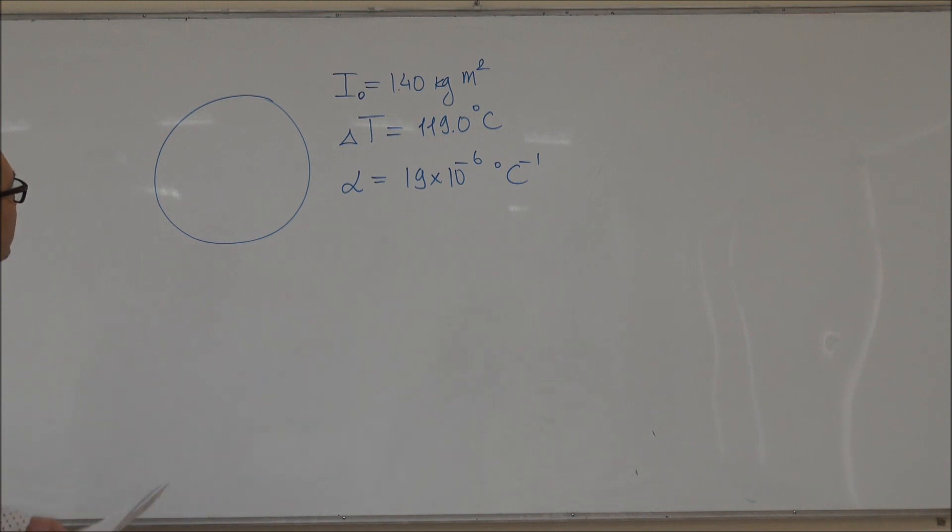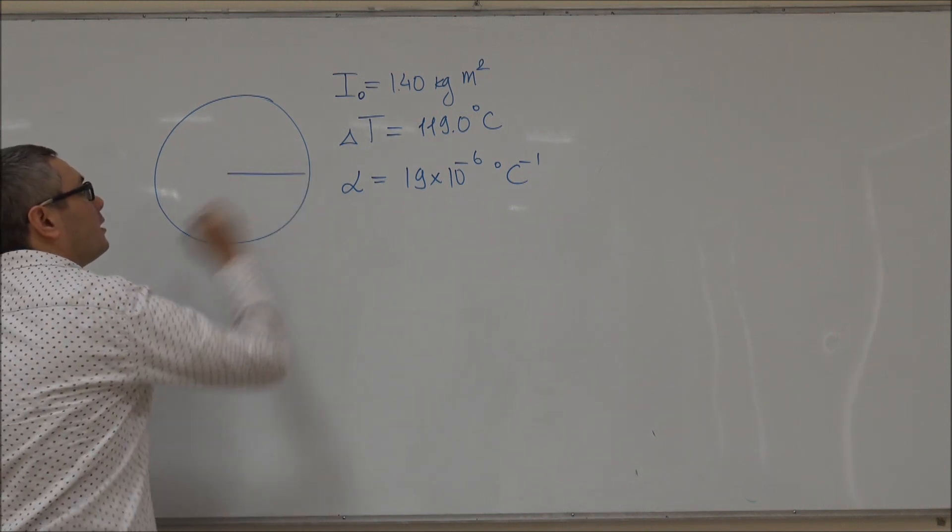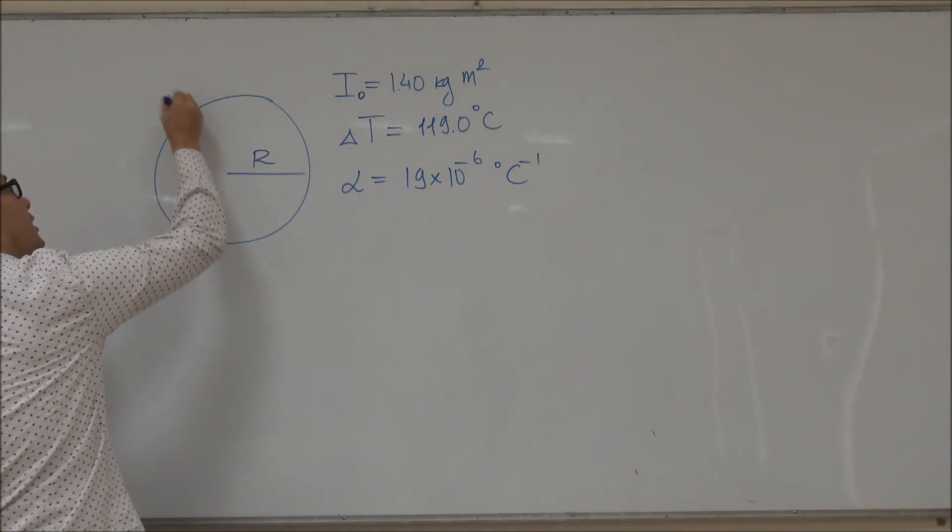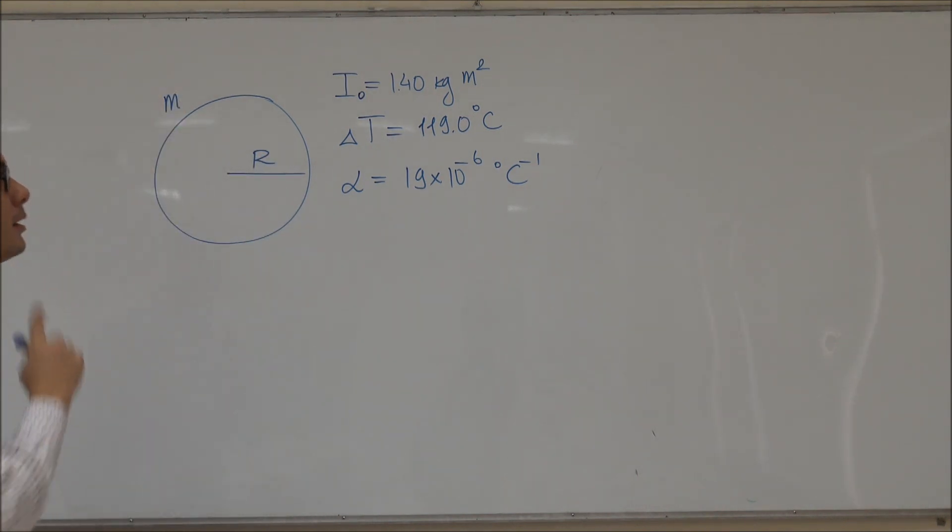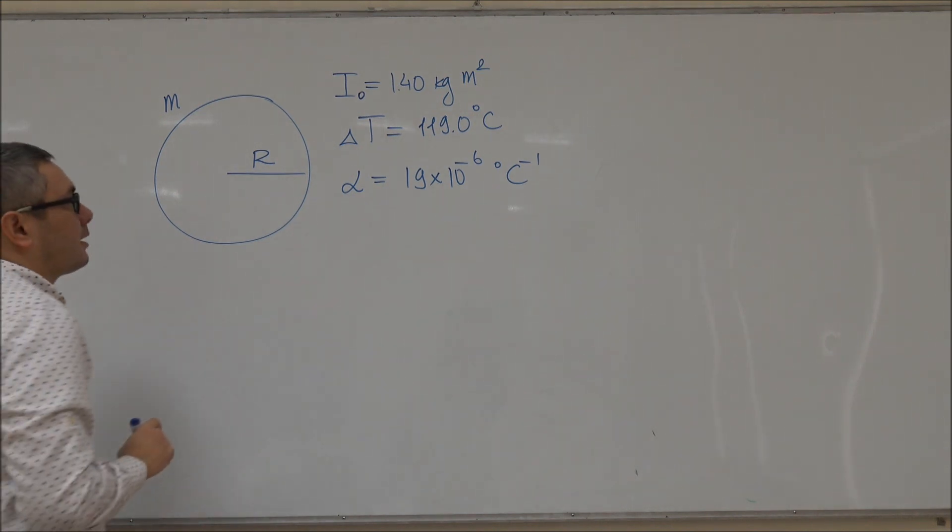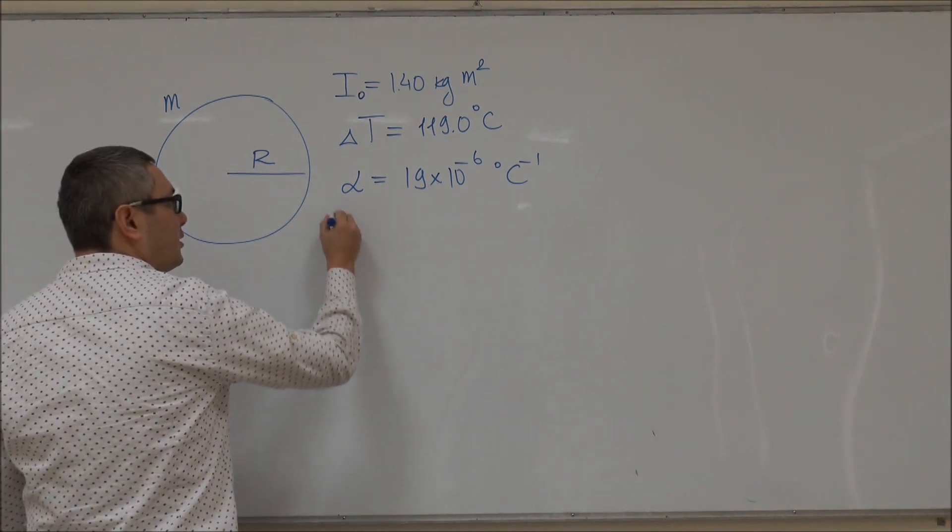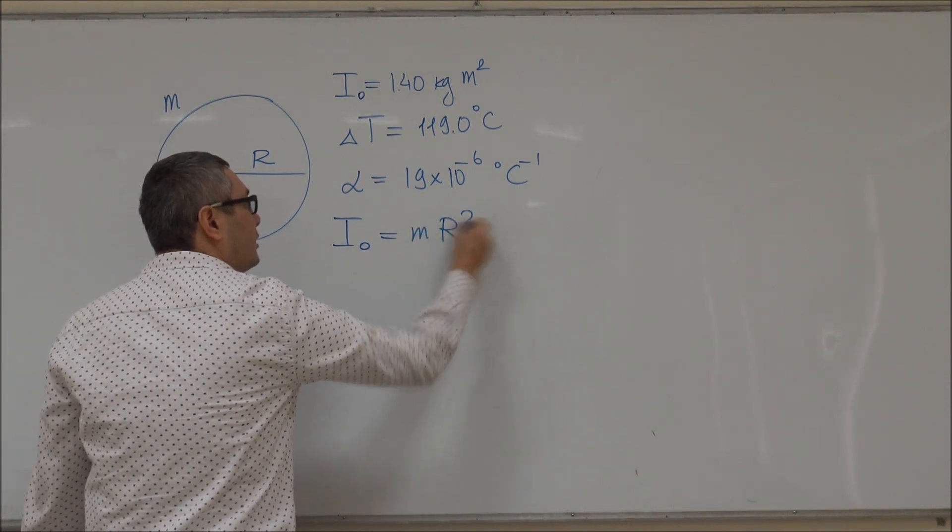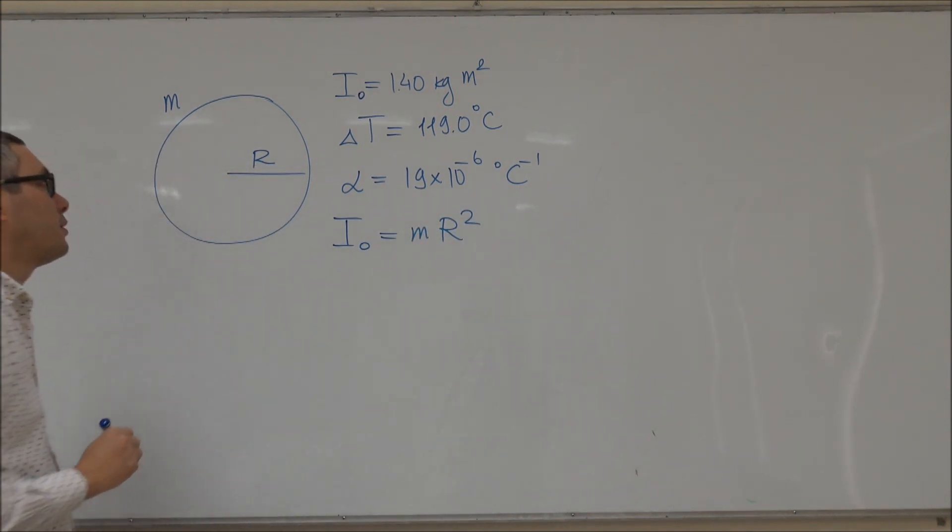So let's assume that before the increase, the radius of the wheel was equal to R and the mass was equal to M. If that is the case, then we can say that I₀ is actually equal to MR², which is the moment of inertia of a ring. In this case it's a wheel.